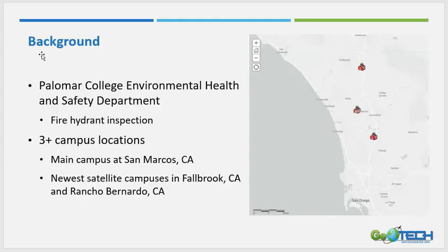To provide some background: the Palomar College Environmental Health and Safety Department asks us to design a form that can be used on their mobile device so they can easily enter information when performing fire hydrant inspections on their properties. Aside from the main campus in San Marcos, California, there are also numerous satellite campuses, with the newest located in Fallbrook, California and also Rancho Bernardo, California.